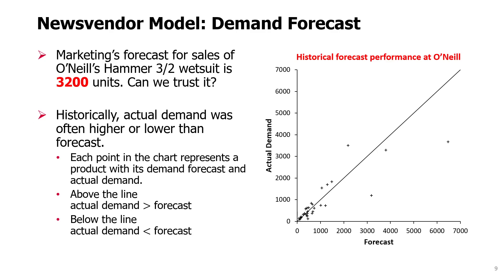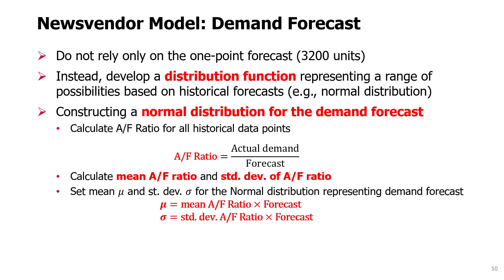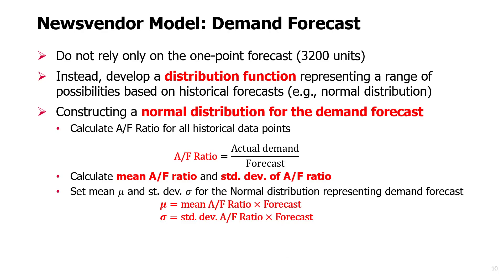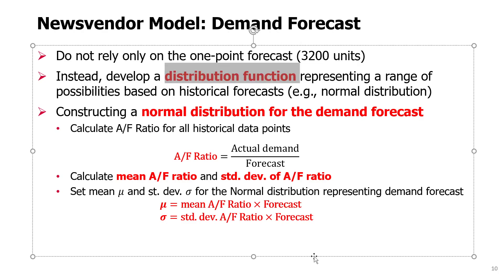We have some data to understand how much we can trust this forecast, and we can actually do even more. What we can do is build a distribution function that represents a range of possibilities based on historical forecasts. The main point is we do not want to rely on a one-point forecast like 3,200 units. Instead, we will build a normal distribution that represents a range of possibilities.